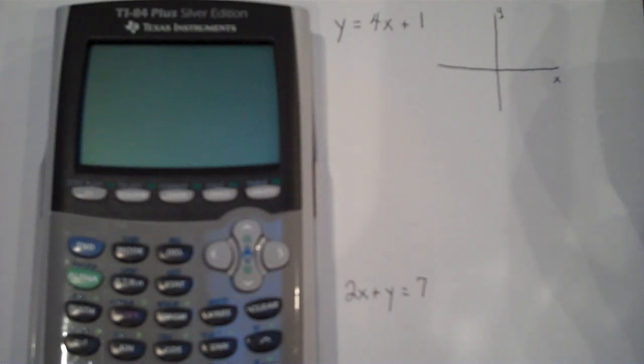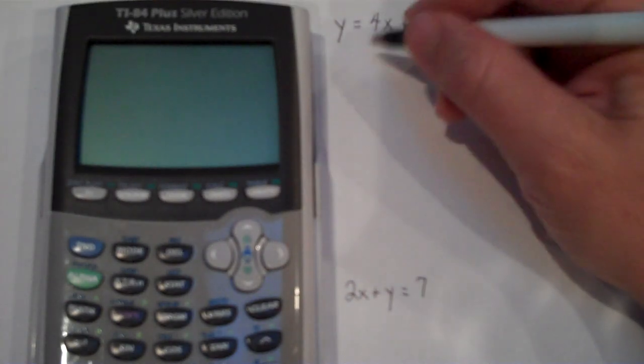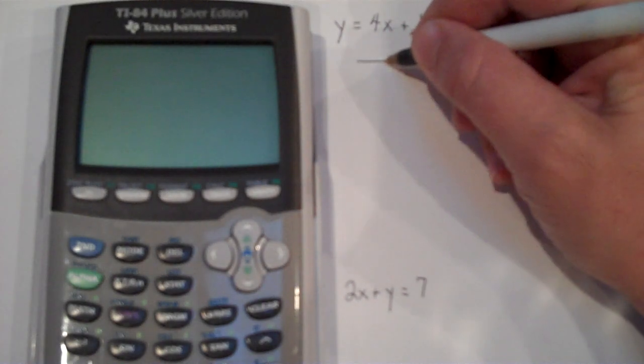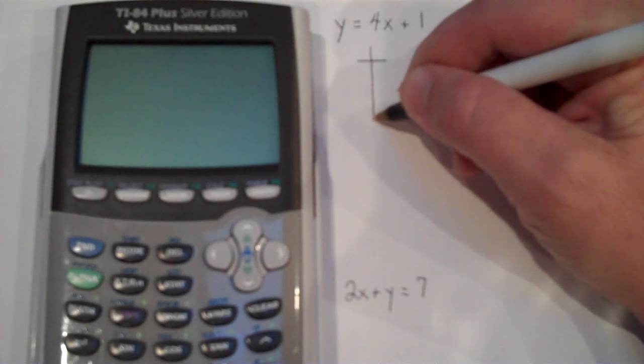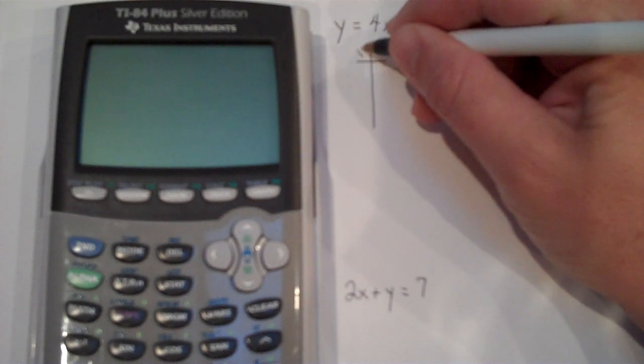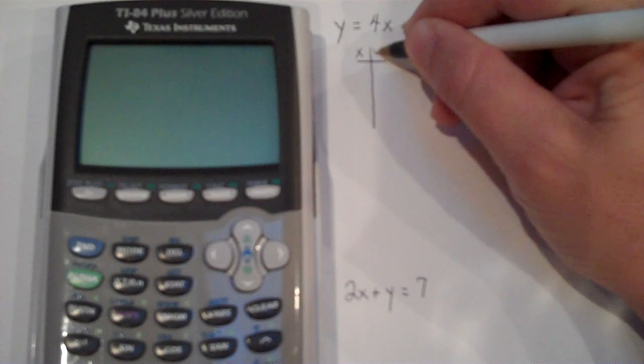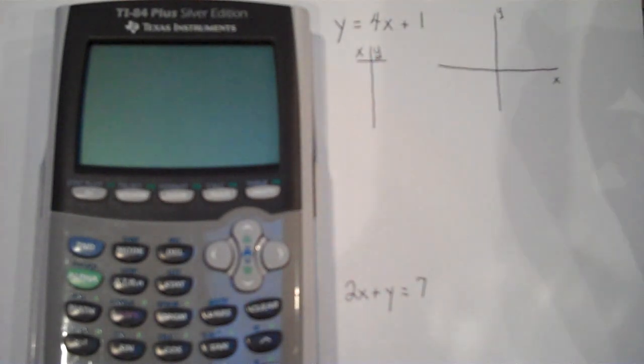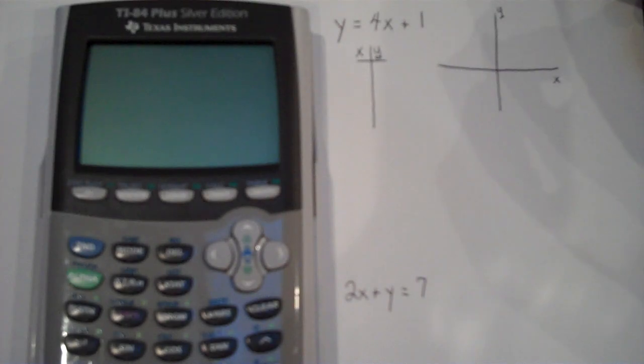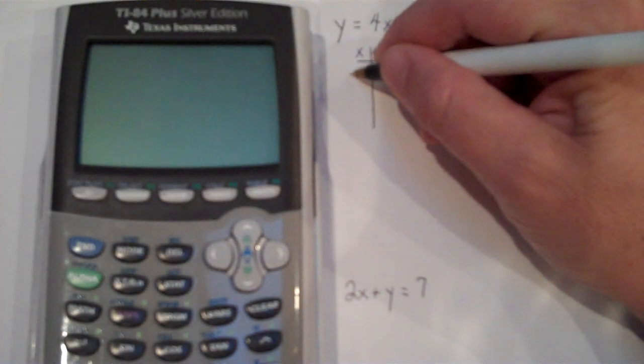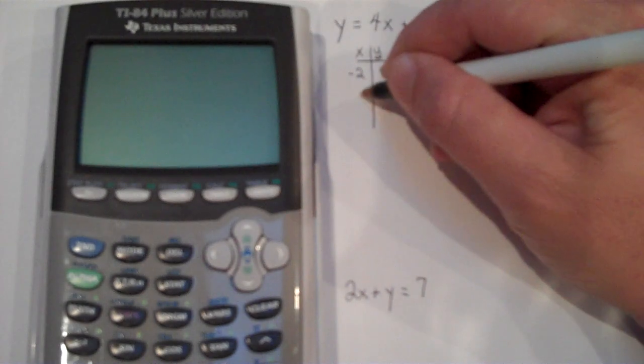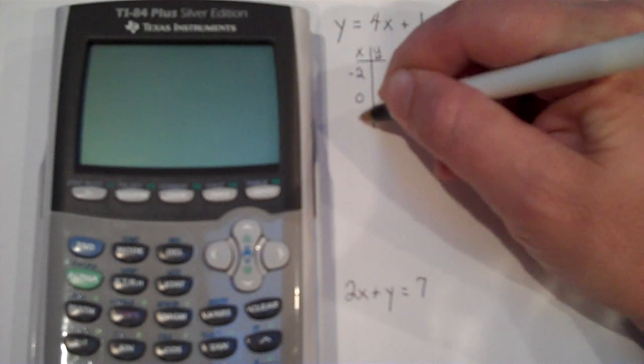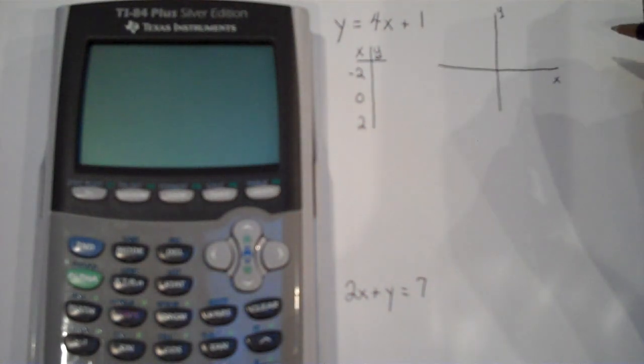Now if I'm going to graph this by hand, my process is that I'm going to make what's called a T-table. Input is X, that always goes first, output is Y. Then I'm going to select a value for input. So I like to work on both sides of the equal sign. I'm going to start with negative 2 and then 0 and then 2. Those are the input values that I'm going to select.